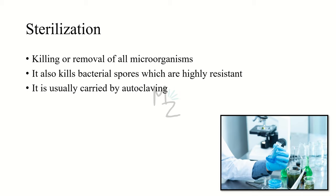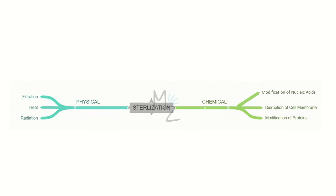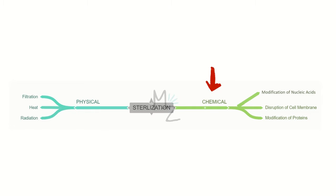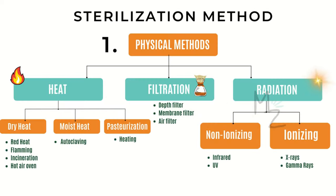Sterilization has two methods. Number one are the physical methods, which are further classified into filtration, heat, and radiation. Number two are the chemical methods, which are further classified into modification of nucleic acids, disruption of cell membranes, and modification of proteins.